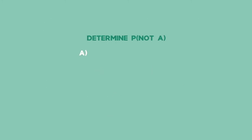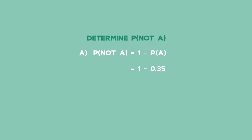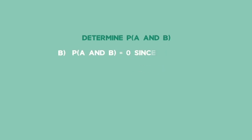Solution A: The probability of not getting event A is equal to 1 minus the probability of getting A. The probability of getting event A is 0.35, so the probability of the complement of A is equal to 1 minus 0.35, which equals 0.65. Solution B: The probability of getting event A and event B is 0, since A and B are mutually exclusive events.